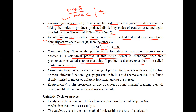So stereoselectivity: if the product is a diastereomer, then it is diastereoselectivity. Now chemoselectivity — when a chemical reaction preferentially reacts with one of two or more different functional groups present on it, it is called chemoselectivity.